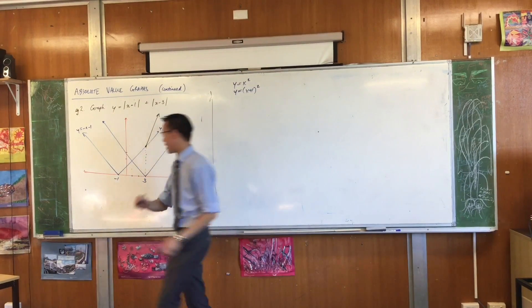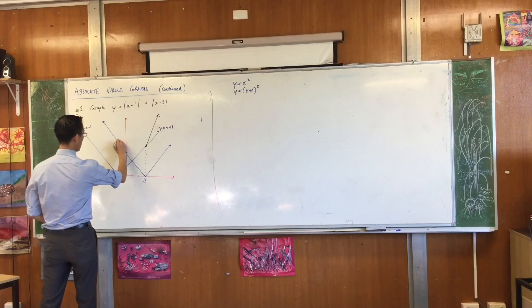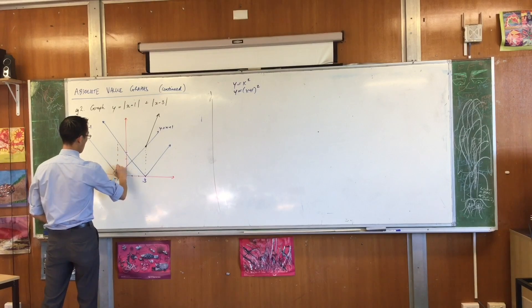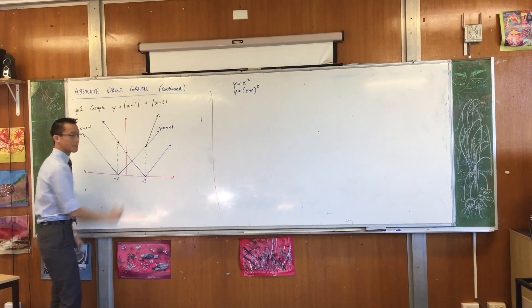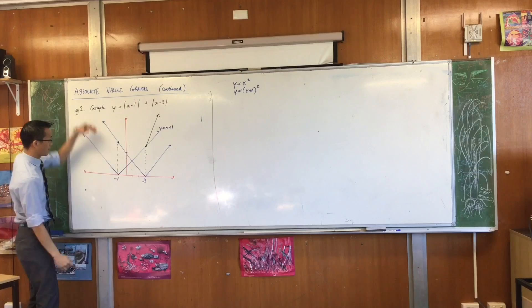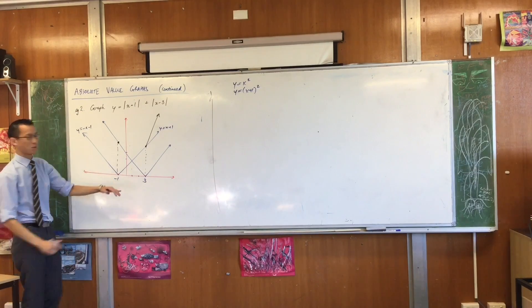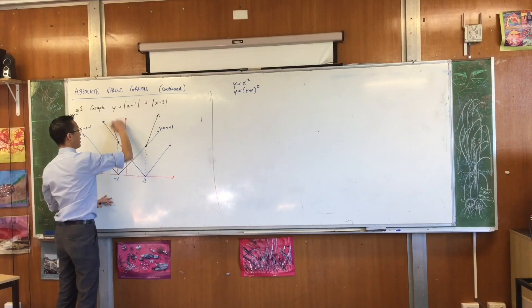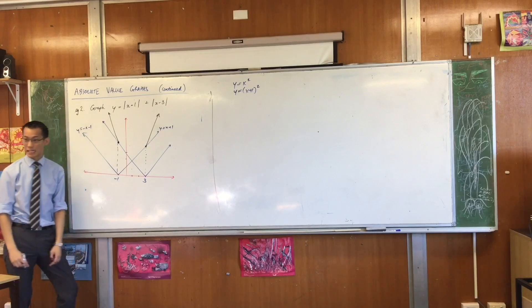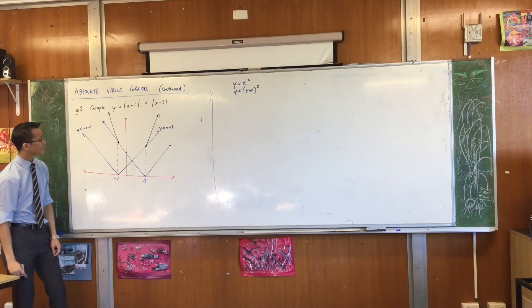So again, you can draw a line like this going to there. And if you put them together, gradient negative 1, another gradient of negative 1, then combined, it's a gradient negative 2.